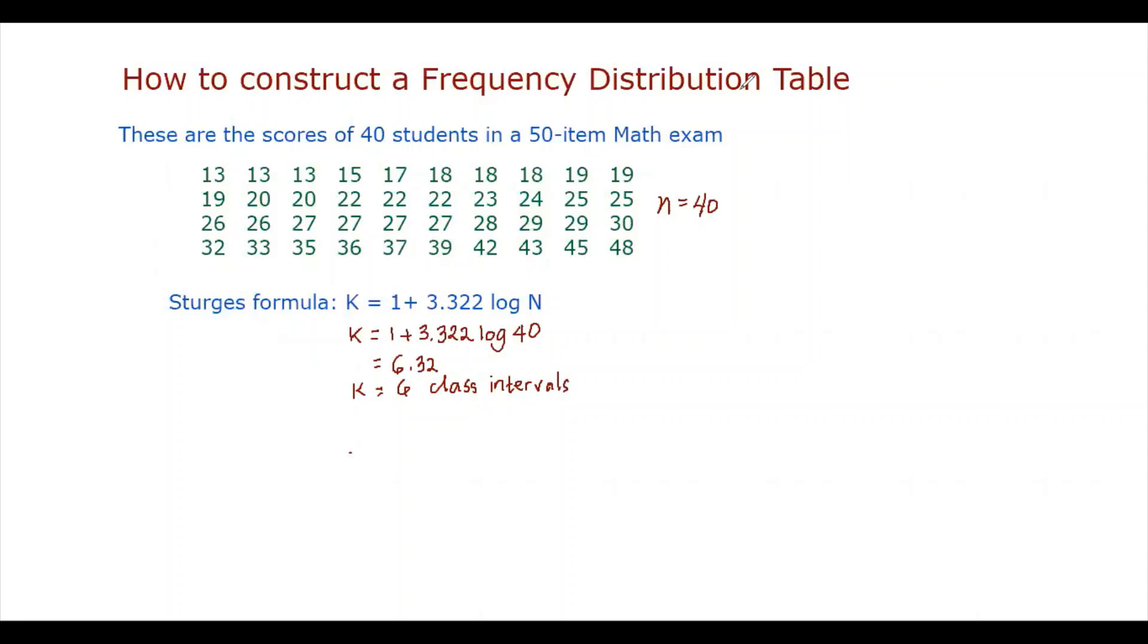So our next step is to determine the range. So the range is computed using this formula. So our highest value is 48, and our lowest value is 13. So our range is 35.